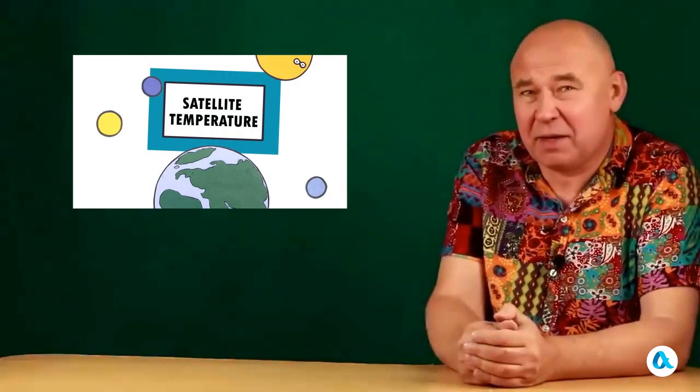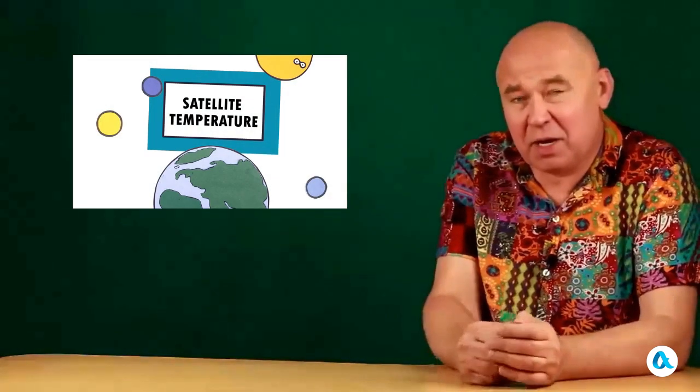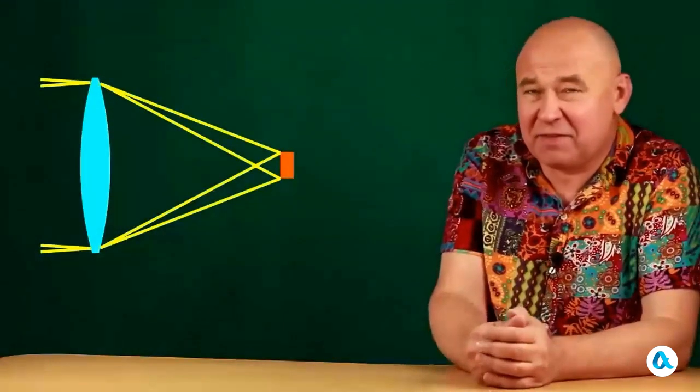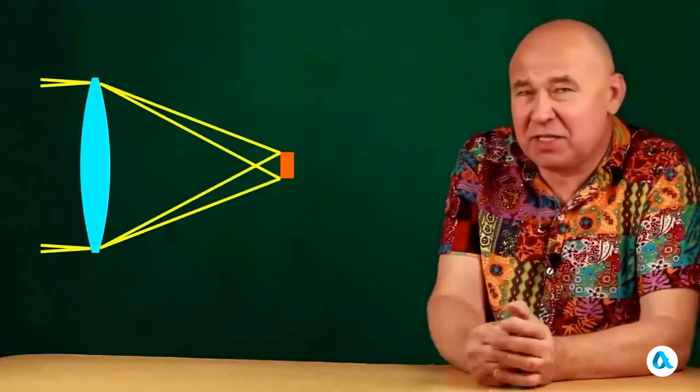To what temperature can we heat an object using sunlight? We had a similar video on this topic called 'satellite temperature,' and I highly recommend you watch it. However, I will slightly modify the reasoning from that video now. First of all, to eliminate thermal conductivity and convection, I will assume that everything takes place in the vacuum of space. We have a large lens that, in a highly effective and efficient manner, concentrates the sun's rays onto the surface of a small object.